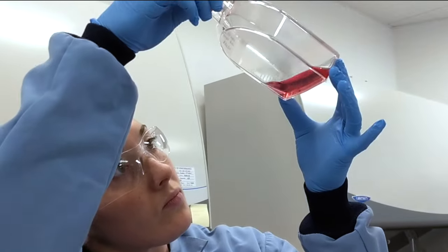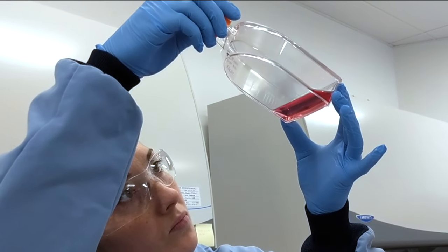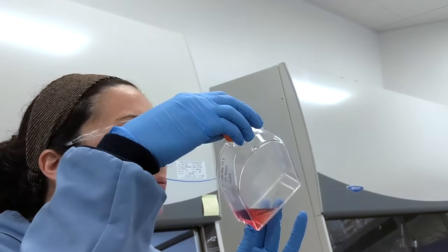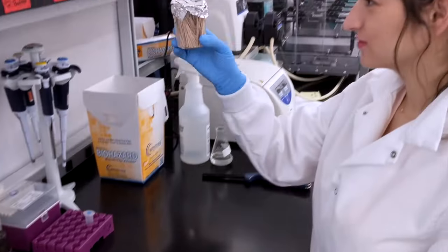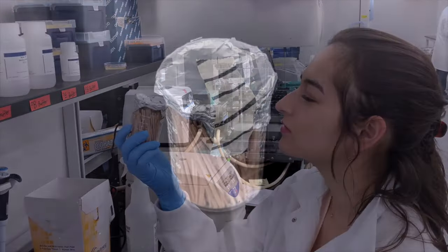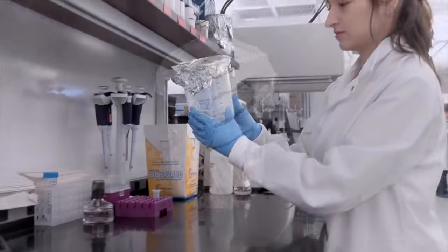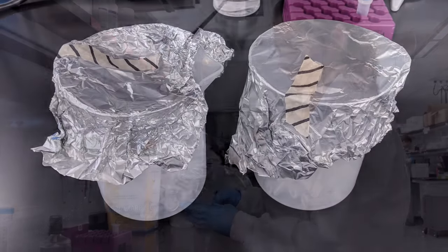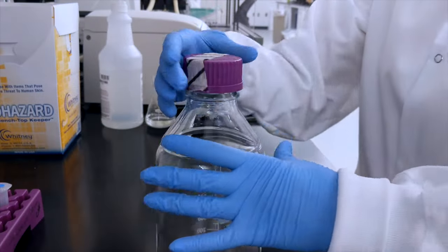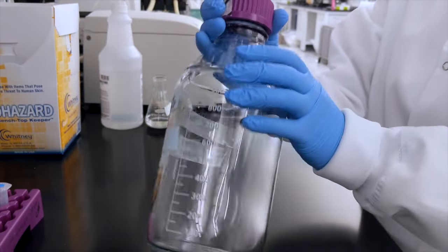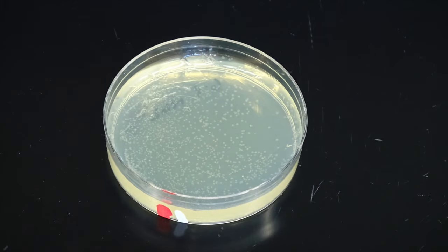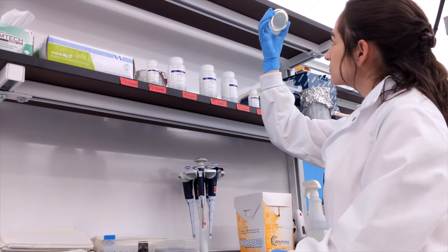Before beginning a task, examine all of your materials for signs of contamination or signs that the sterility may have been compromised. Check all autoclaved items to ensure that the indicator tape has changed colors. For items that are covered with foil, check for tears or holes. For capped items, ensure that the cap has been tightly sealed. When working with agar dishes, examine the dishes for signs of microbial growth.